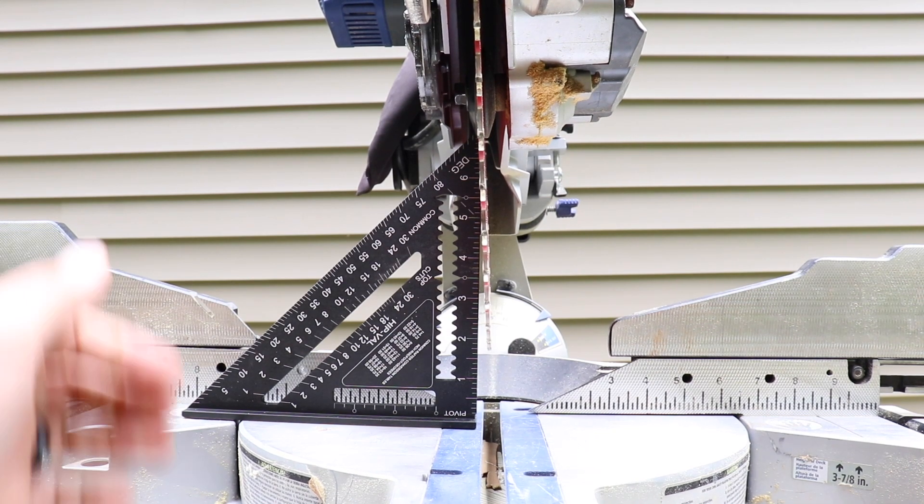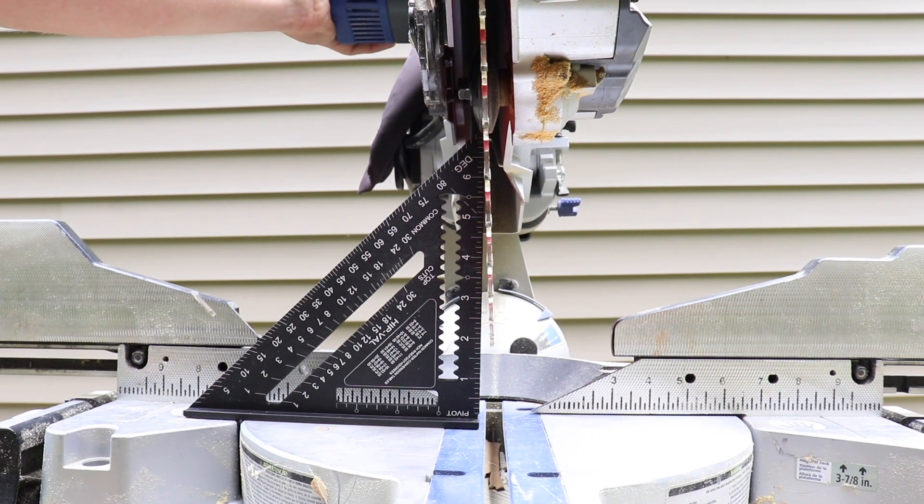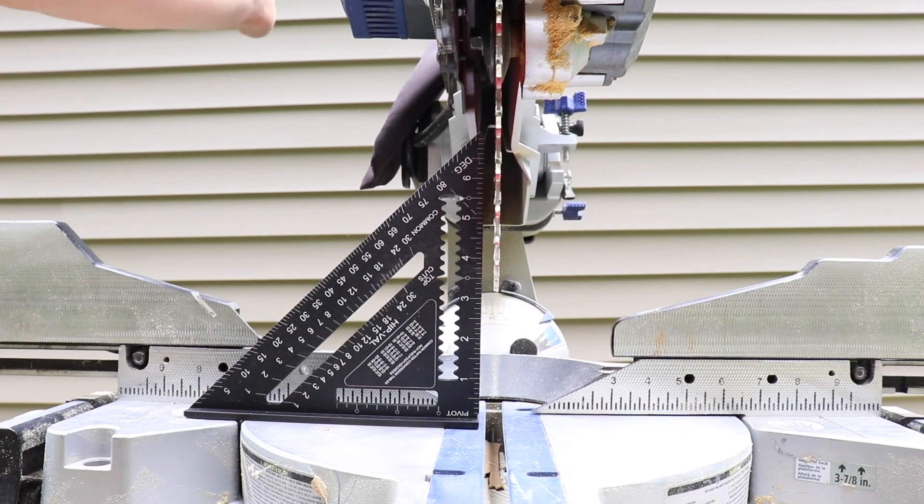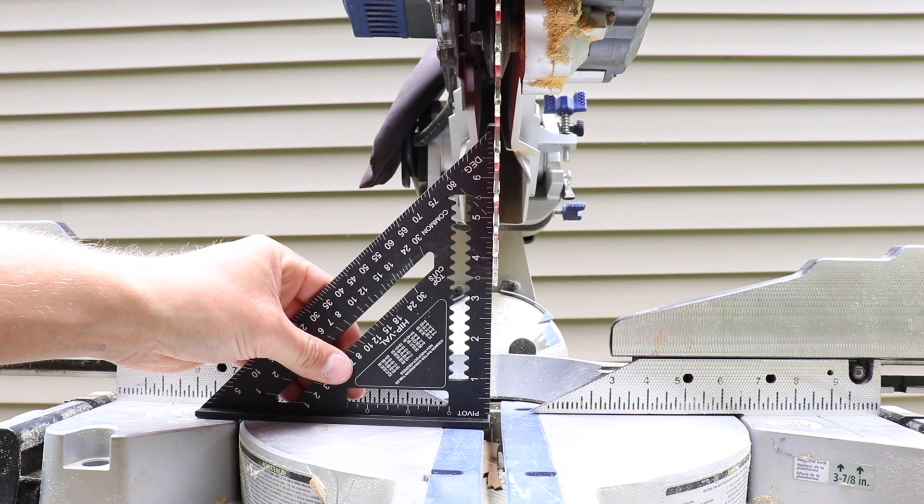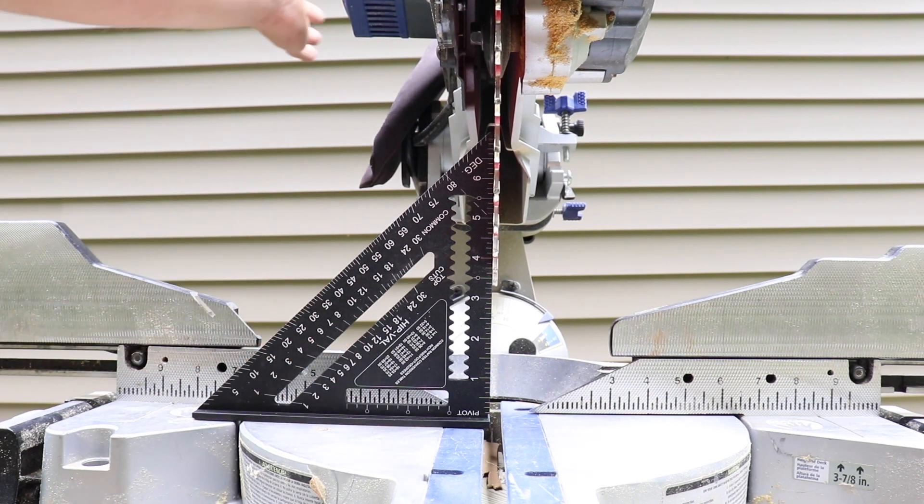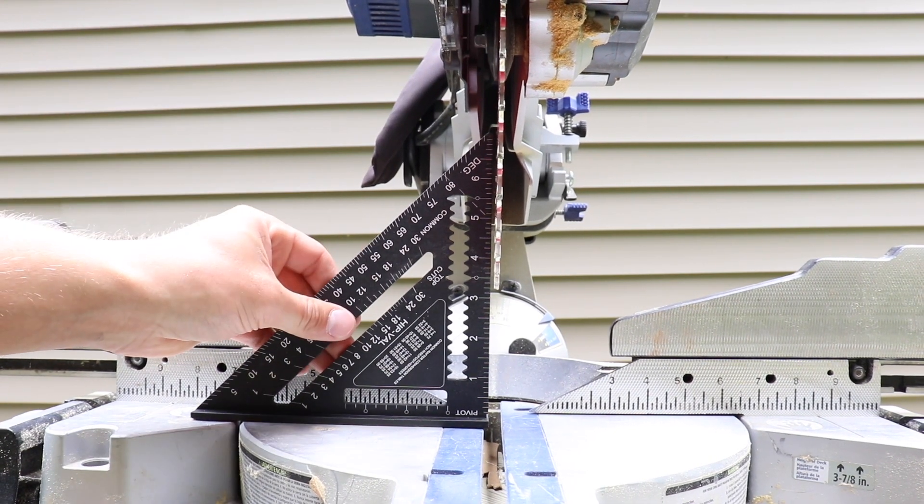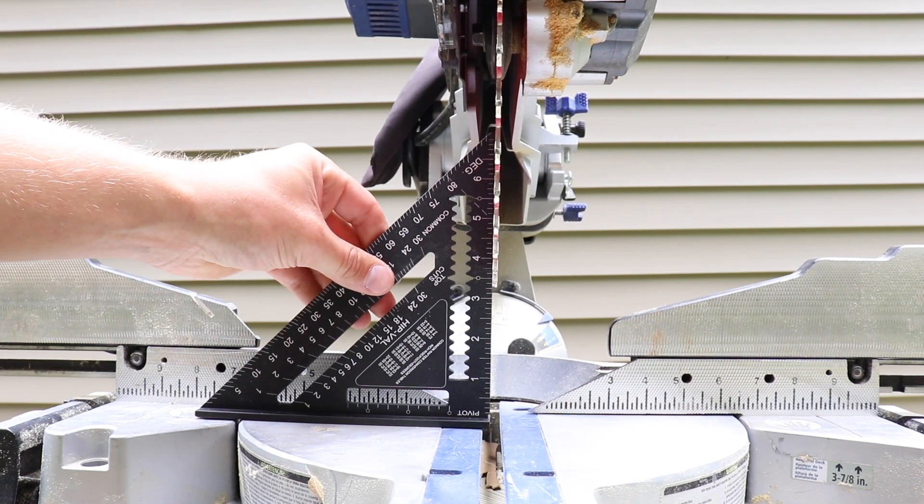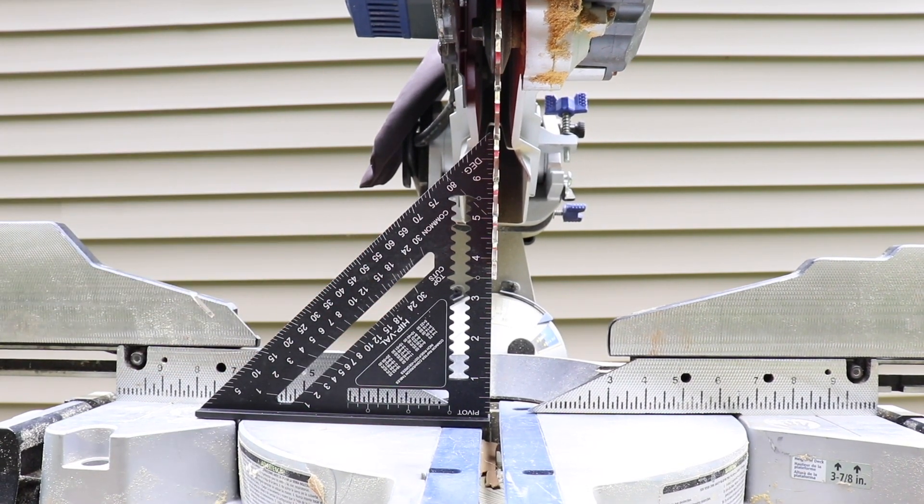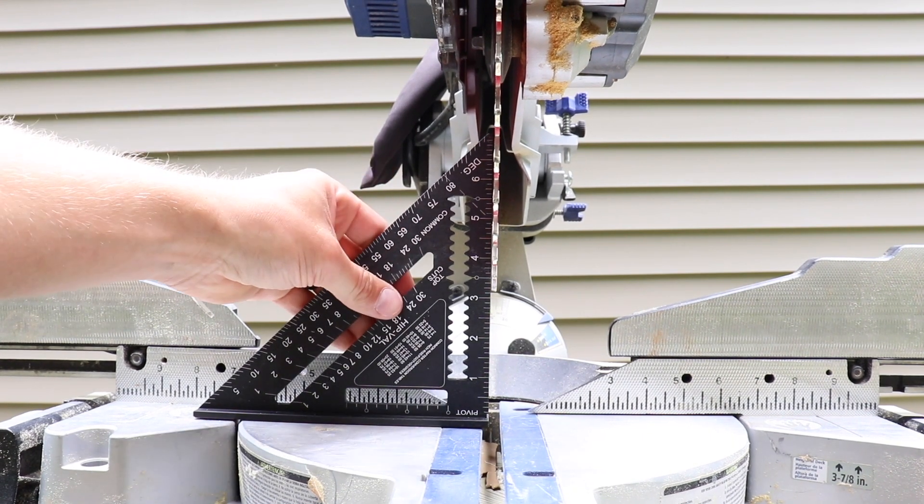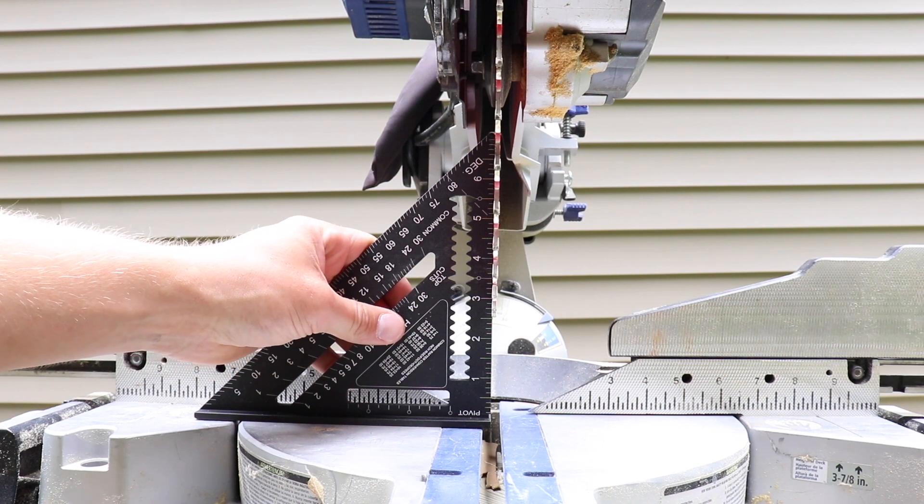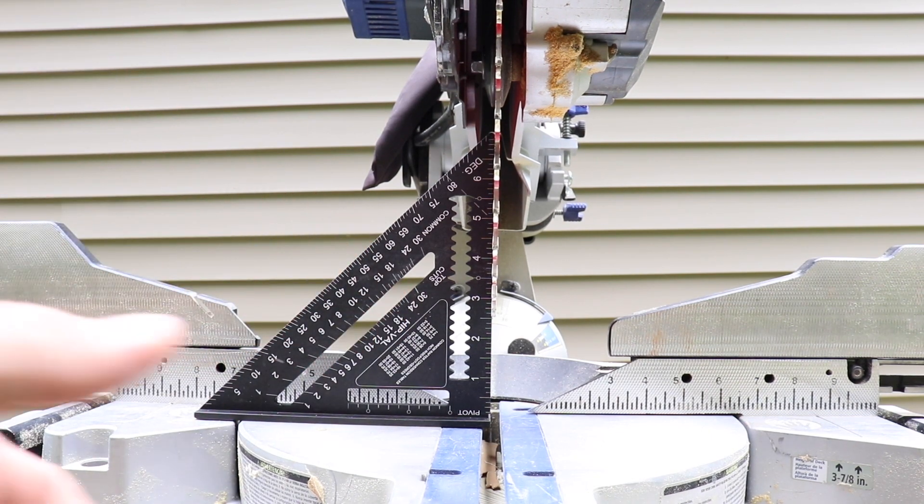So what we'll do, we'll just bump the saw over, unlock it, bump it over, check it again. We're getting close. Give it a few more hits. Back the other way a little bit. And you can see we're pretty good there. So that's what I do. Then I'll lock this down.